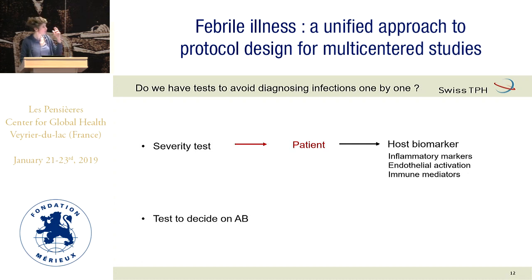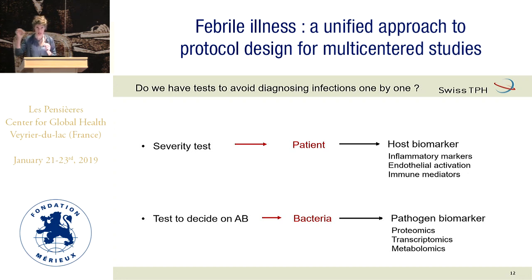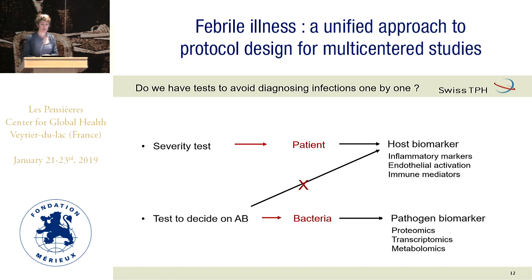For severity, it makes sense to look for host biomarkers — like the group of Kevin Kane looking at inflammatory, endothelial, and immune markers. For tests to decide on antibiotics, this is different: we're talking about the bacteria, so we should look for pathogen biomarkers. The big mistake we've made up to now, probably explaining current failures, is mixing up the two levels — looking at host biomarkers to predict antibiotic need. This will never work.